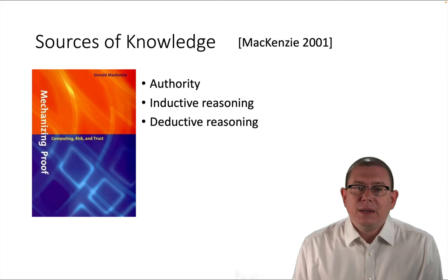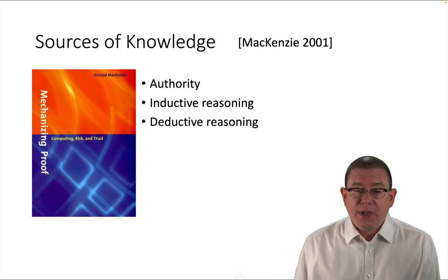Douglas McKenzie, a sociologist of technology, in his book Mechanizing Proof identifies three categories that can be sources of knowledge about programs and other artifacts.